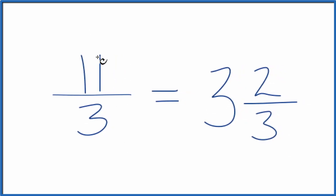Bring the 3 across. And this improper fraction, 11 thirds, equals the mixed number 3 and 2 thirds.